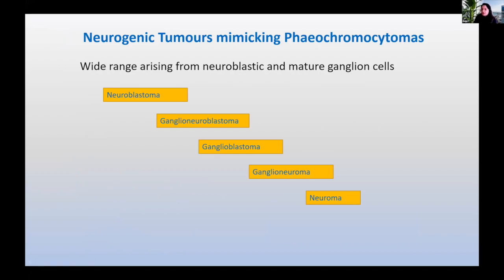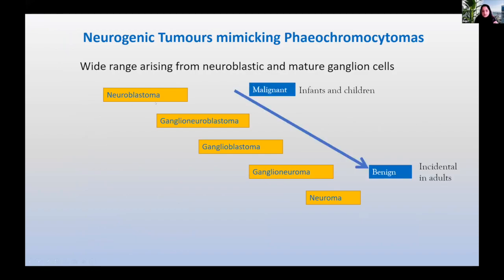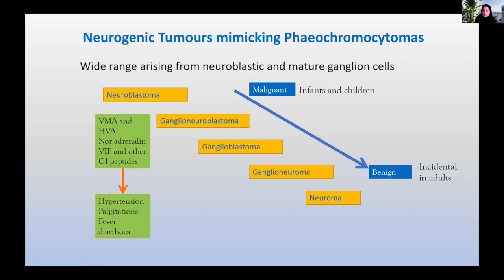Aside from pheochromocytomas, the medulla also produces other neuroendocrine tumours ranging from the very malignant neuroblastomas — generally seen in infants and children — to the very benign-looking neuromas, which are incidental findings in adults. Most will produce other hormones in addition to catecholamines. The more malignant they are, the more VMA and HVA they produce; as they become more benign, they produce noradrenaline and GI peptides. They present with hypertension, palpitations, fever, and GI symptoms if VIP or VMA levels are high.